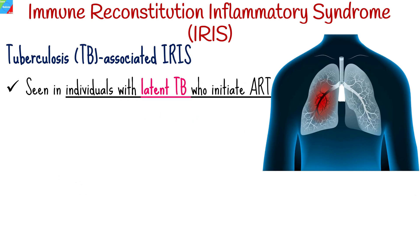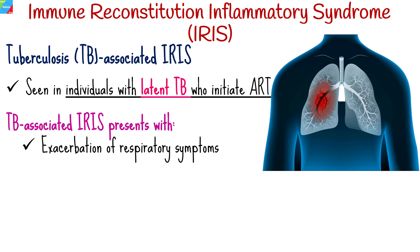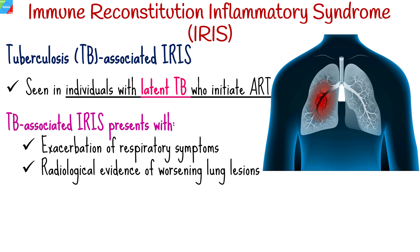Tuberculosis-associated IRIS is one of the most extensively studied forms of this syndrome. In individuals with latent TB who initiate antiretroviral therapy, there is a heightened risk of developing TB IRIS. This condition often presents with an exacerbation of respiratory symptoms, radiological evidence of worsening lung lesions, and constitutional symptoms like fever and weight loss.